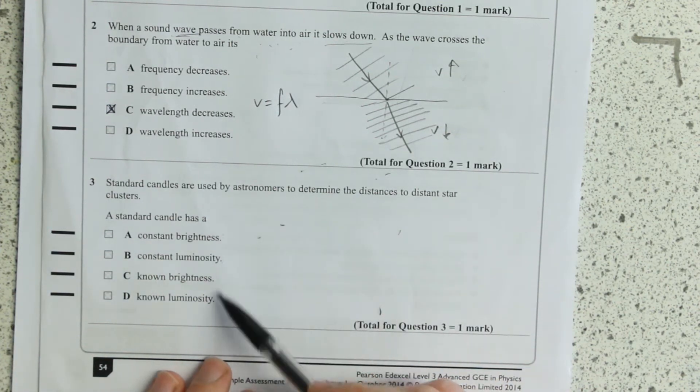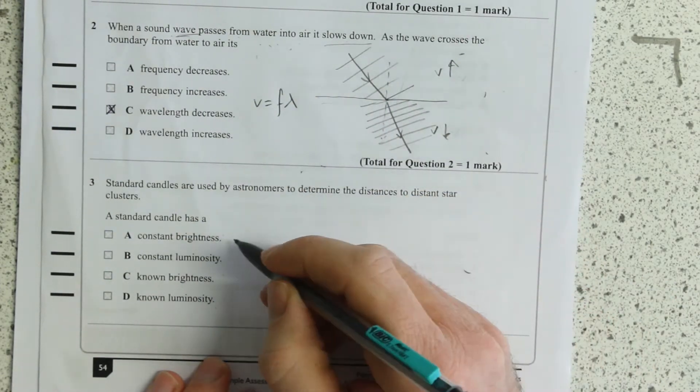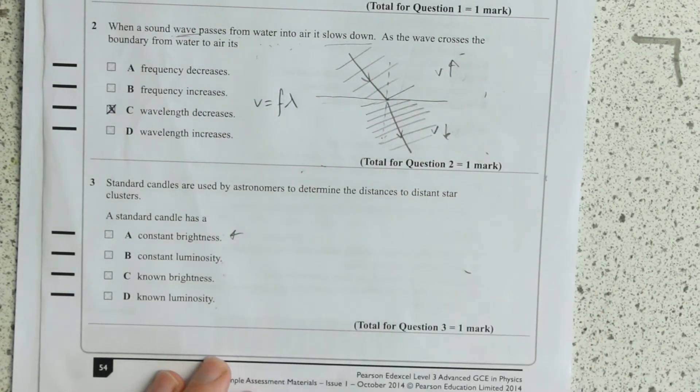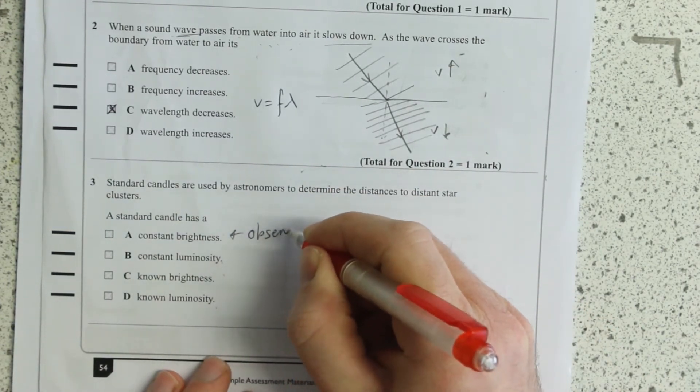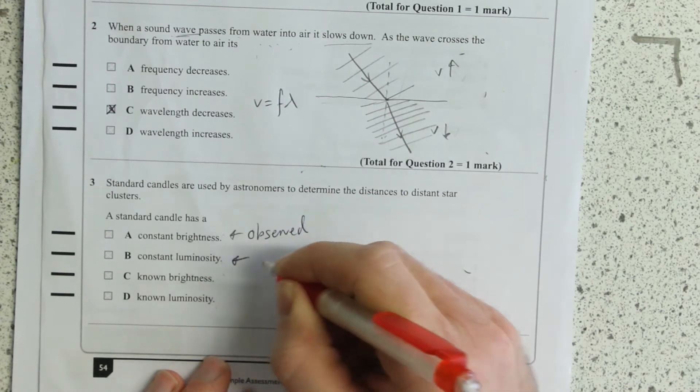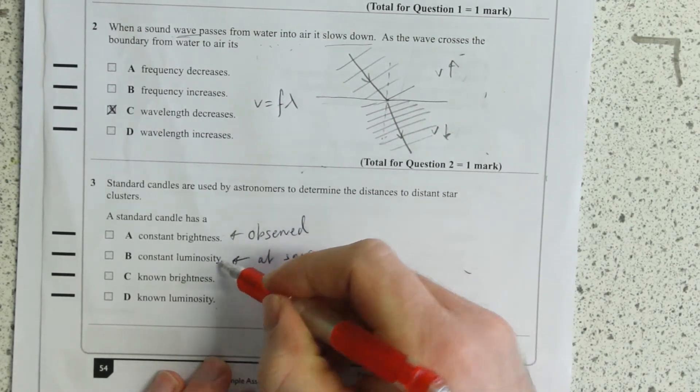That's the main part there. So what is brightness and what is luminosity? Well, brightness is as it's observed here on Earth or wherever, and luminosity is at source - it's the power output at source.